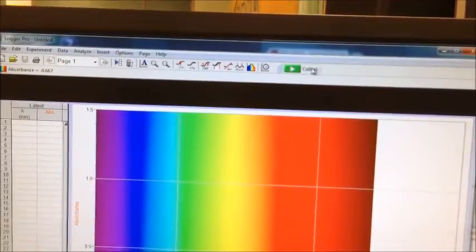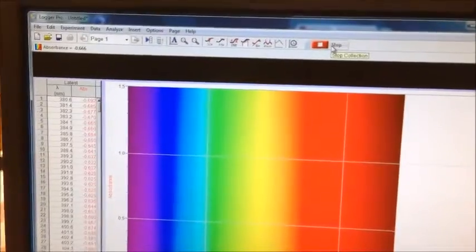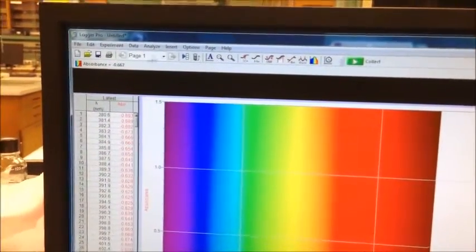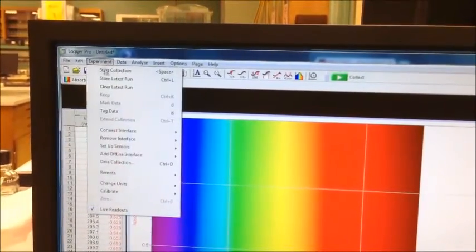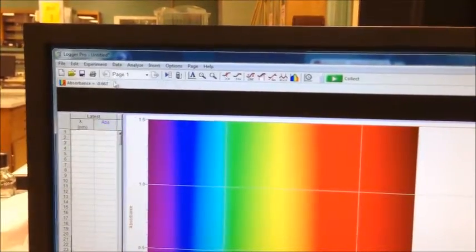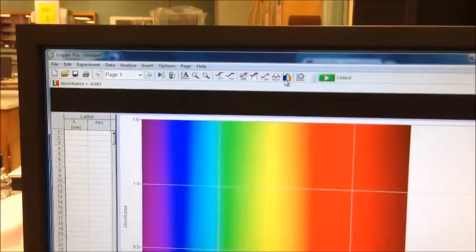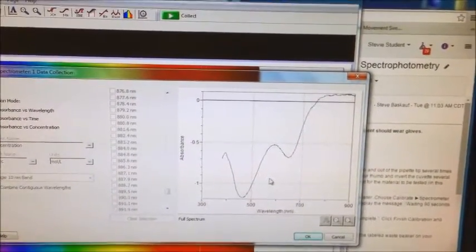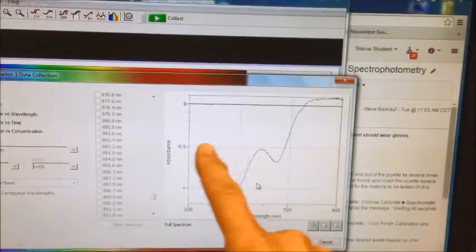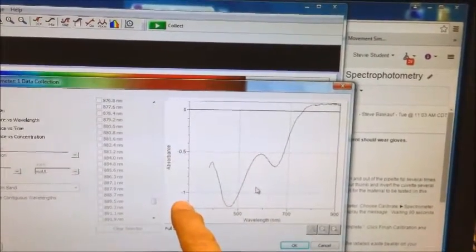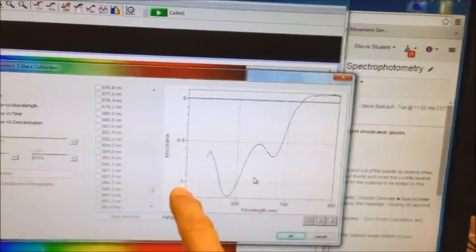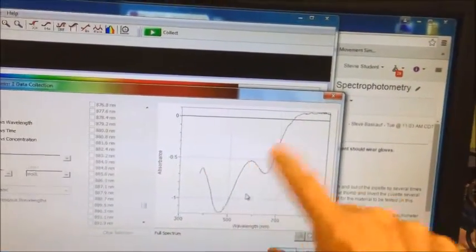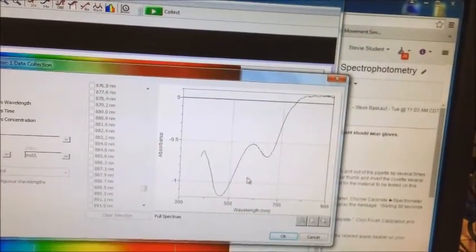I'm going to tell it to collect. It's collected data. I will tell it to stop. Store latest run. Let's see what we have. Interestingly enough, almost every value is negative, and it's not in the hundredths place like the last experiment I did. Everything is significantly negative. Why is that the case?